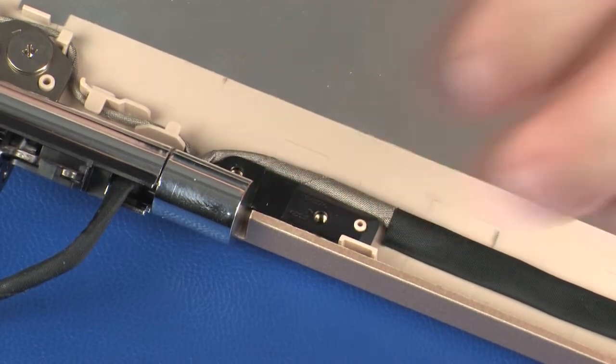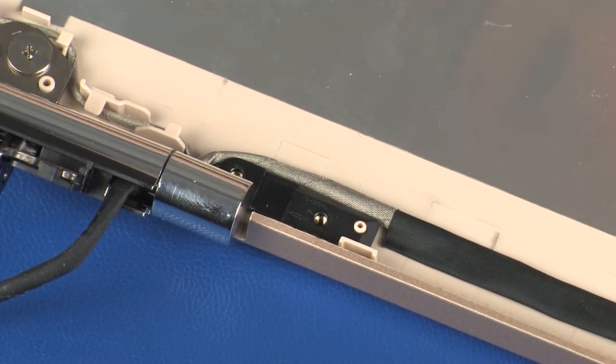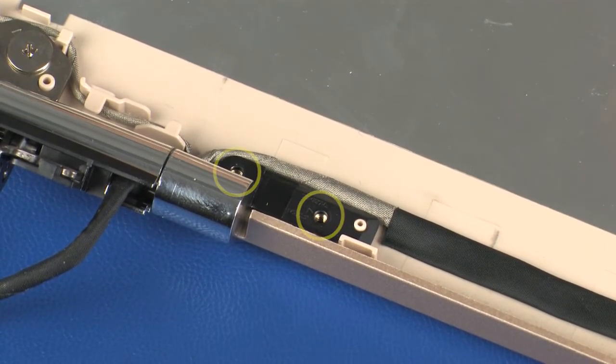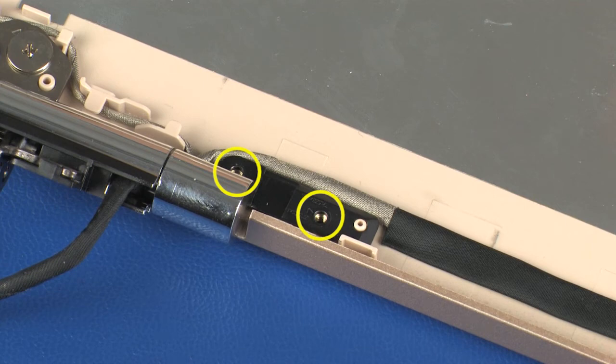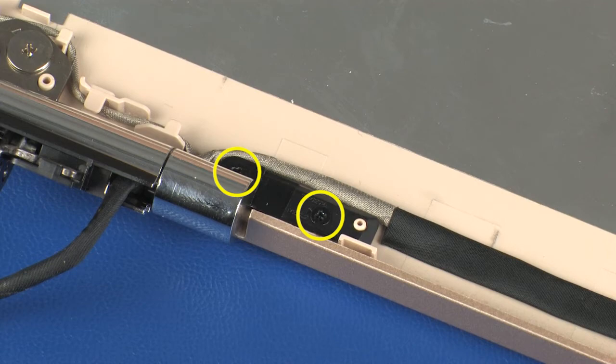Replace the two 2.5mm P1 Phillips-head screws that secure the left hinge cover to the display enclosure.